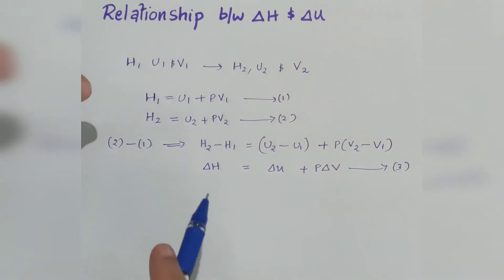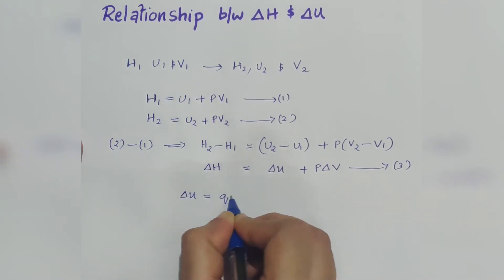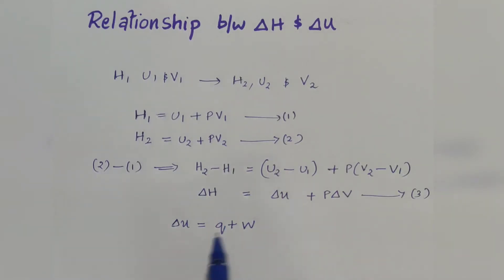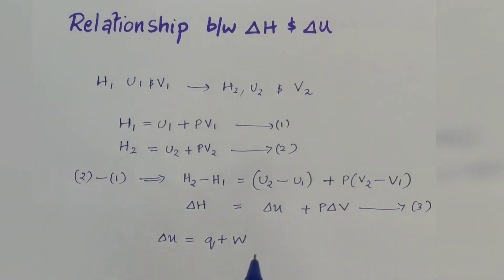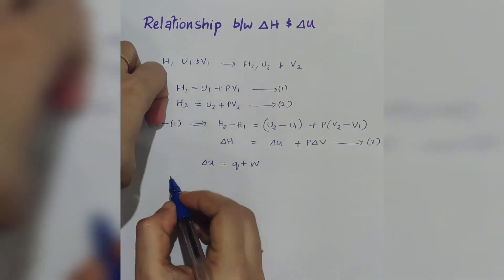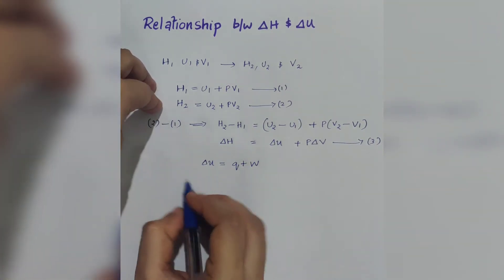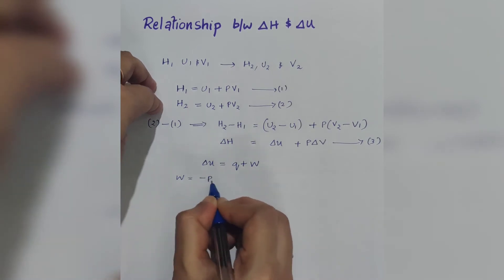According to the first law of thermodynamics, delta U is equal to Q plus W, where Q is the heat and W is the work done by or on the system. If only PV work — that is, pressure-volume work — is involved in this process, then W is equal to minus P delta V.